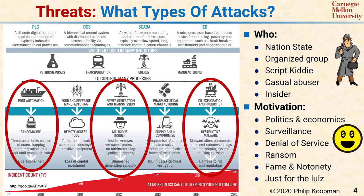Finally, some attackers just do it for the lulls — they think it's fun to break a system. There may not be a rational way to evaluate whether it's likely to happen to your system; it might just happen because someone decides it would be fun to attack you. Overall, for threat analysis, you should handle the most likely agents and motivations, but something can always happen, which is why security is never really perfect. Rather, it's a trade-off of risk versus reward.